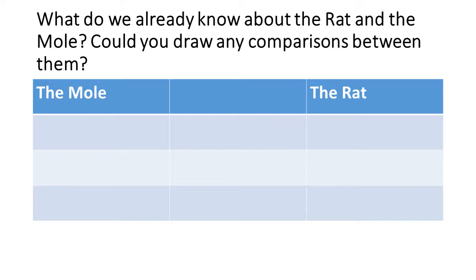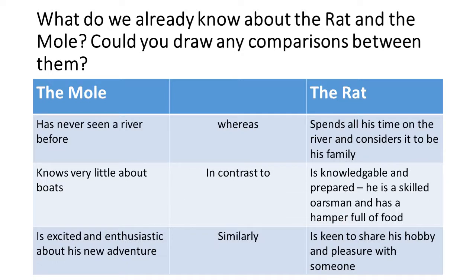So what do we already know about the Rat and the Mole? Could you draw any comparisons between them? Pause the video to draw out this table and write what we know about those two characters. The Mole has never seen a river before, whereas the Rat spends all his time on the river and considers it to be his family. The Mole knows very little about boats, in contrast to the Rat, who is knowledgeable and prepared — a skilled oarsman with a hamper of food. The Mole is excited and enthusiastic about his new adventure. Similarly, the Rat is keen to share his hobby and pleasure with someone. So we can already start making comparisons using our comparative connectives between those two characters. Make sure you have those written down.